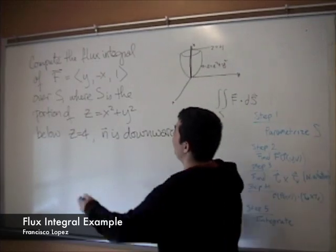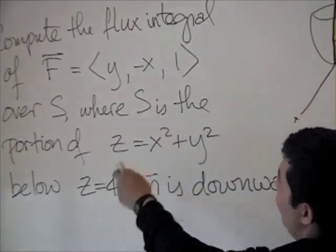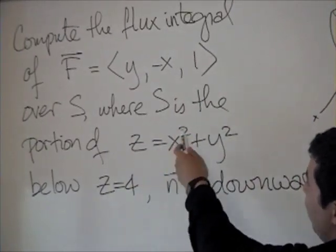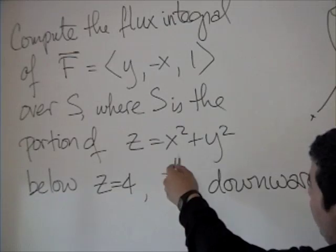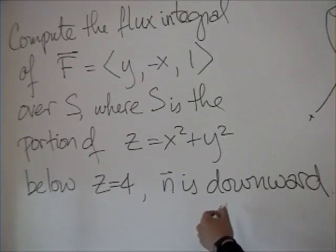Okay, so to compute this flux integral of F = <y, -x, 1> over a surface where S is the portion of z = x² + y² below z = 4 and the normal vector is downward.